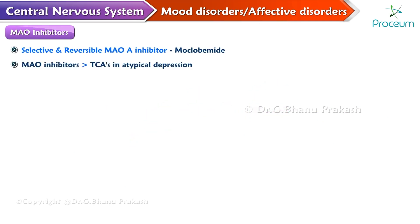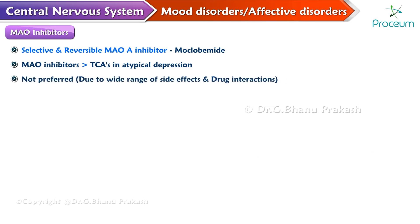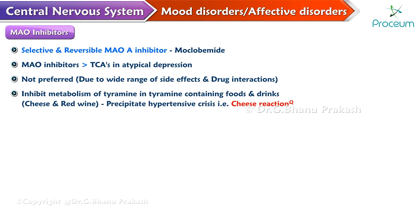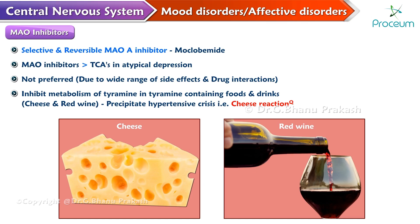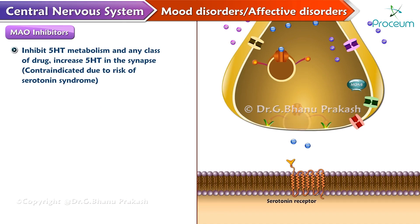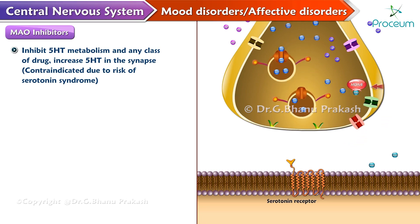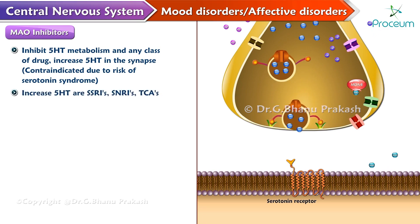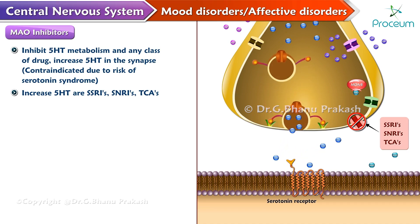MAO inhibitors are more effective than tricyclic antidepressants in atypical depression. These drugs are not preferred due to a wide range of side effects and drug interactions. The MAO inhibitors can inhibit the metabolism of tyramine in tyramine-containing foods and drinks like cheese and red wine, and it can precipitate a hypertensive crisis — that is the cheese reaction. The MAO inhibitors are also hepatotoxic. They inhibit serotonin metabolism, and any class of drug that can increase serotonin in the synapse is contraindicated due to the risk of serotonin syndrome. The drugs that can increase serotonin include SSRIs, SNRIs, and tricyclic antidepressants.